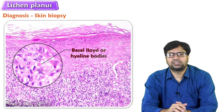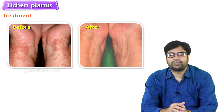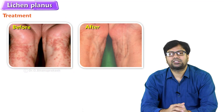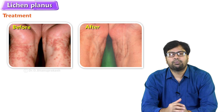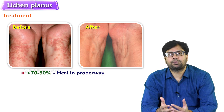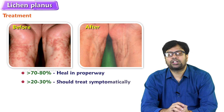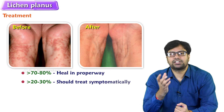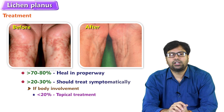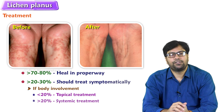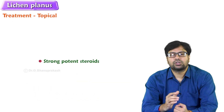This is how we diagnose lichen planus and differentiate it from other conditions. How do we treat it? Usually lichen planus heals properly, leaving white patches on the skin. More than 70 to 80 percent of patients heal on their own, but the remaining 20 to 30 percent should be treated symptomatically. If less than 20 percent of the body is involved, we go with topical treatment; if more than 20 percent is involved, we go with systemic treatment.